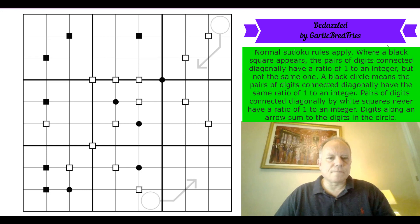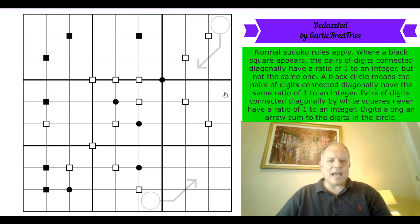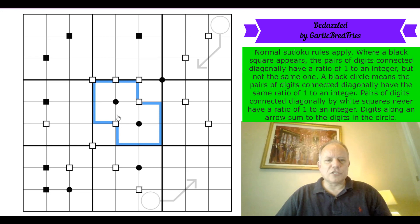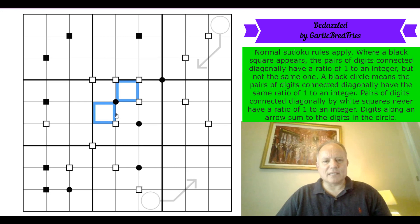The black circles are the ones with the most positive information. In this central box we've got two overlapping black circles. If the ratio was one to two, the black circle connects numbers like one-two, two-four, four-eight, or three-six — quite a few possibilities.